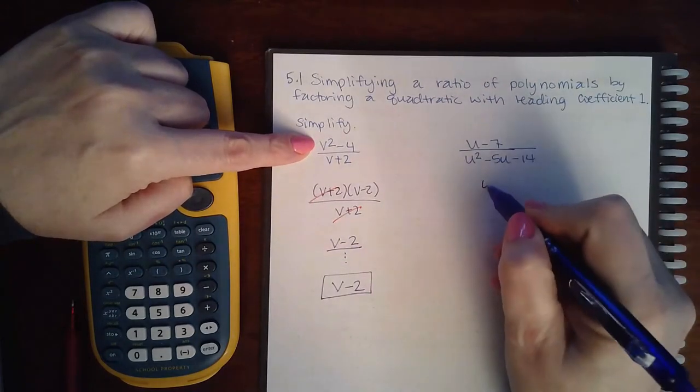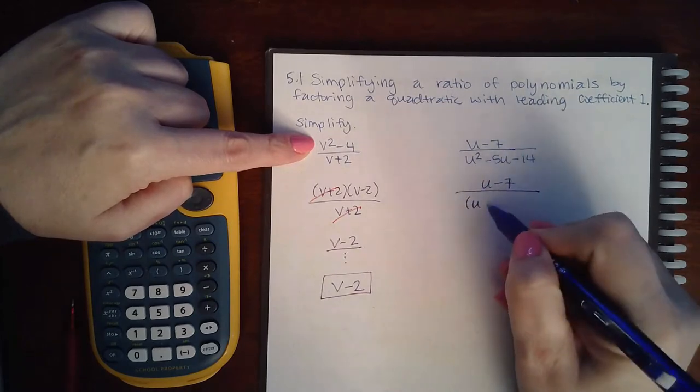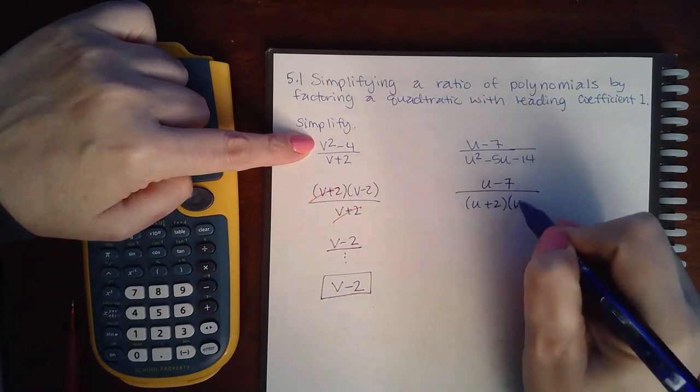Here, if I factor the denominator, I get u plus 2 and u minus 7.